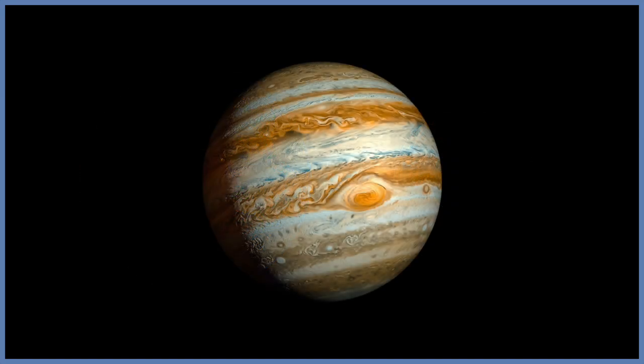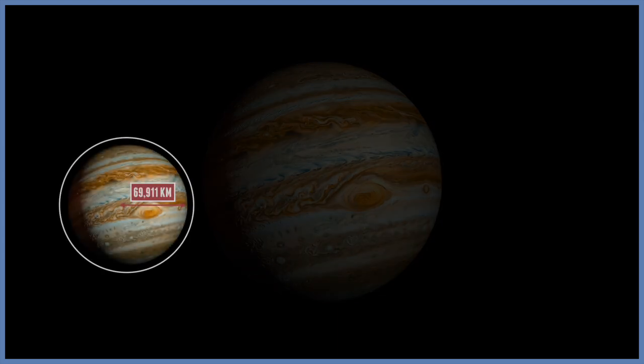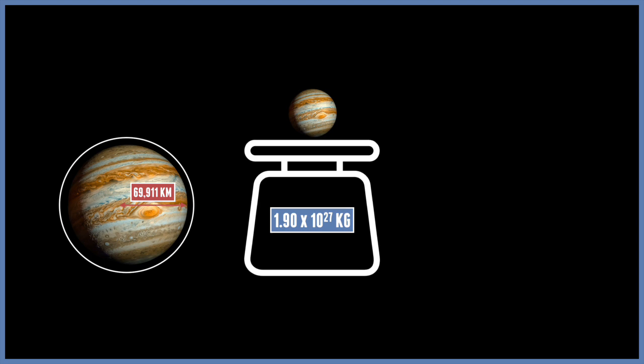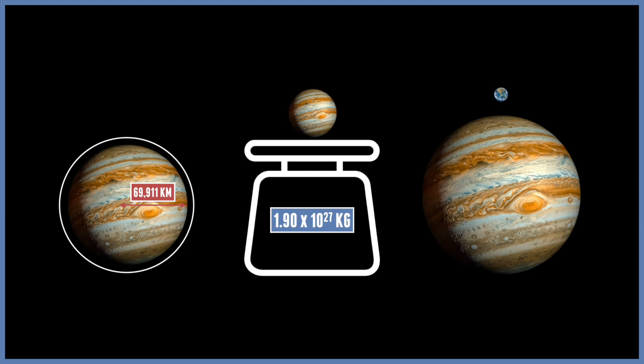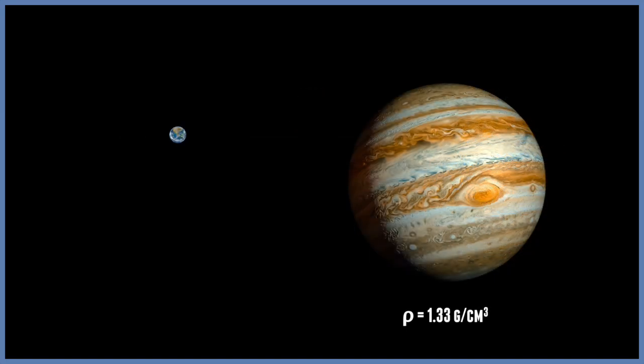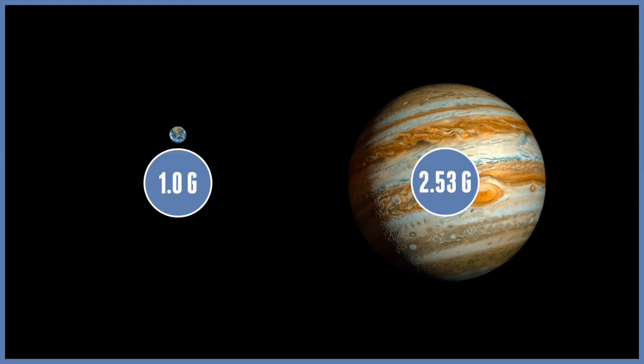Jupiter, the king of the planets, is just under 70,000 kilometres in radius with a mass of 1.9 times 10 to the 27 kilograms — completely dwarfing Earth and all the inner planets. But because it's mainly made of gas, it has a much lower density, so despite its considerable size, it doesn't have as high a g as you'd expect. It comes out at 24.75 metres per second squared — only 2.53g, just 2.5 times the strength of Earth, even though Jupiter's mass is over 320 times that of Earth.